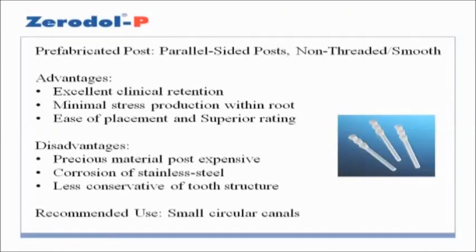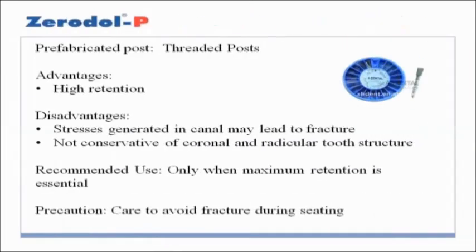Parallel-sided non-threaded or smooth posts. Advantages: excellent clinical retention, minimal stress production within root, ease of placement and superior rating. Disadvantages: precious material posts are expensive, corrosion of stainless steel, less conservative of tooth structure. Recommended use: small circular canals. Threaded posts. Advantages: high retention. Disadvantages: stresses generated in canal may lead to fracture, non-conservative of coronal and radicular tooth structure. Recommended use: only when maximum retention is essential. Precaution: care to avoid fracture during seating.